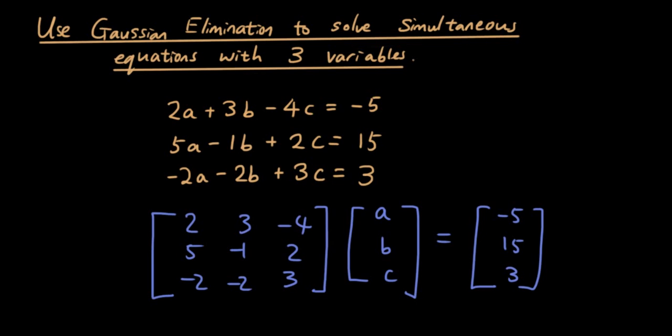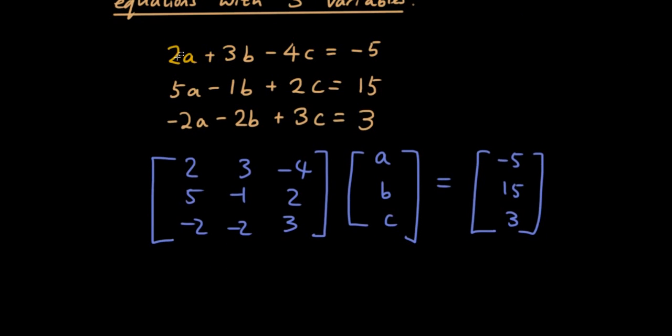And the first thing you've got to do is rewrite this system of equations as a matrix equation. So now I have the coefficient of each of these variables written inside the first matrix, a, b, and c, which are the variables written inside the second matrix, and the result on the right-hand side written in the resulting matrix.